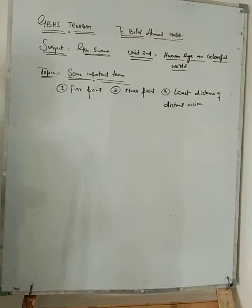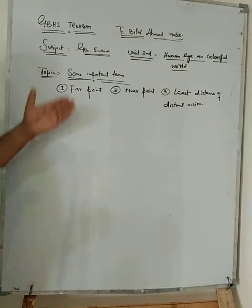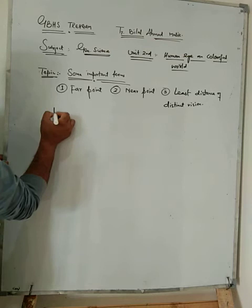Welcome, dear students. Welcome back to General Science class, tenth unit number two, that is Human Eye and Colorful World. Today we are going to read some important terms: far point, near point, and least distance of distinct vision.